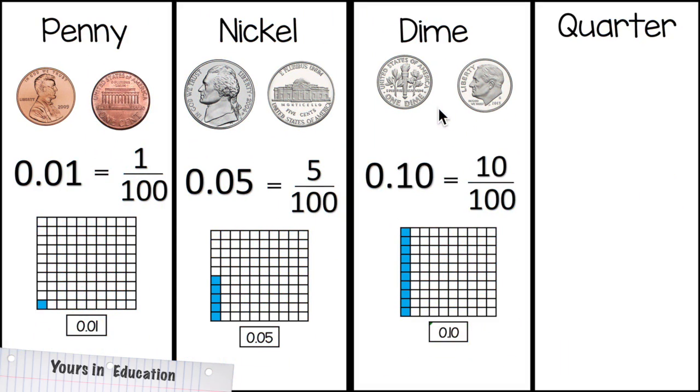The next coin is the dime. On the obverse of the dime, we have President Franklin Roosevelt. And on the reverse, we have an olive branch, a torch, and an oak branch.